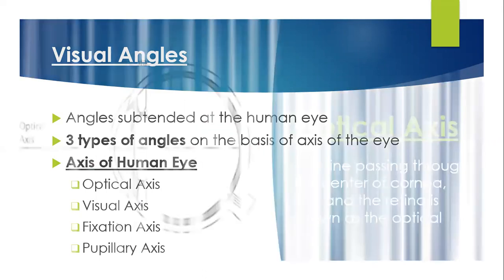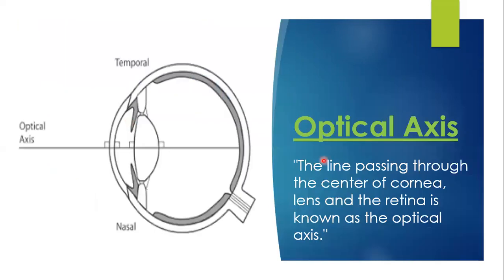So what is the optical axis? It is a line that is passing from the centers of all the structures present — like it passes from the center of the cornea, center of the lens, and the center of the eye. That will be the optical axis. So the line passing through the center of the cornea, lens, and the retina is the optical axis.